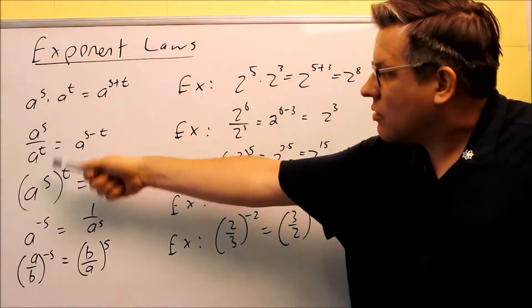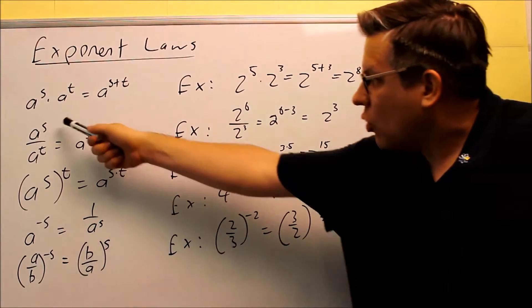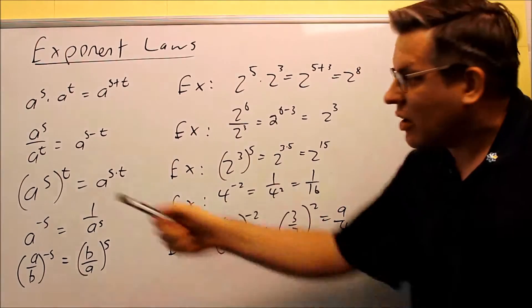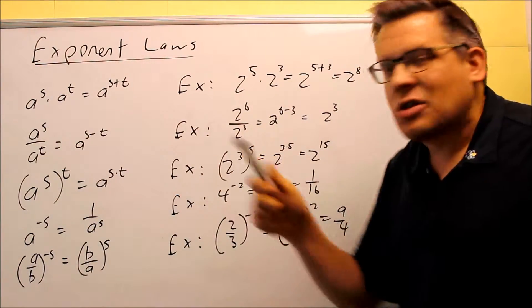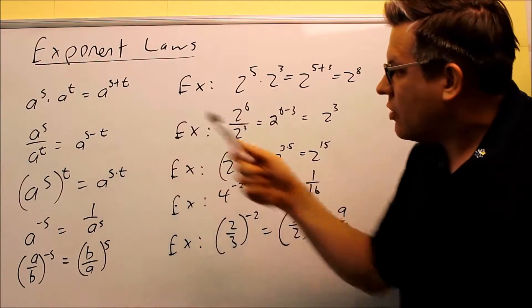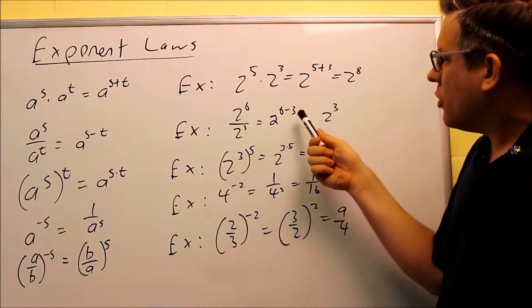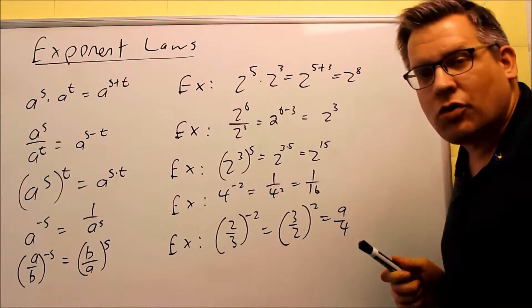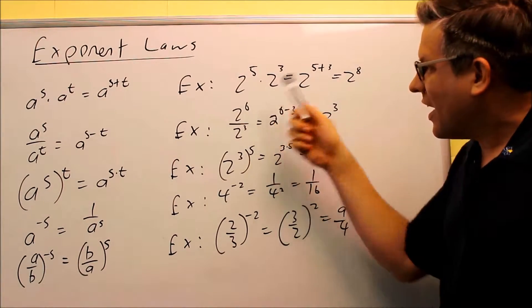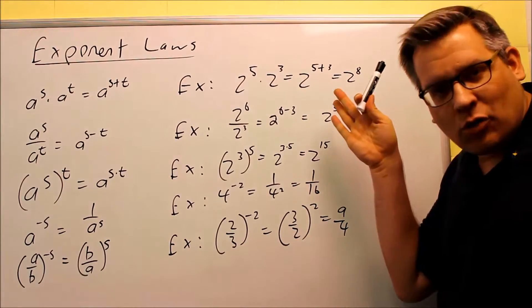For ones like this, where you have the same base, one on top, one on the bottom, you're always going to take the top exponent minus the bottom, and so you subtract the exponents there. So 6 minus 3 will give you 3, therefore 2 to the 3rd would be your answer on that one. Again, these rules only work if you have equal bases.